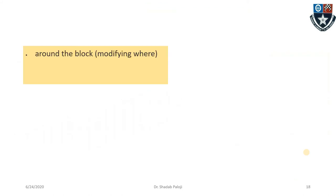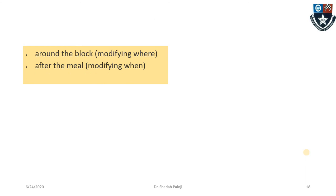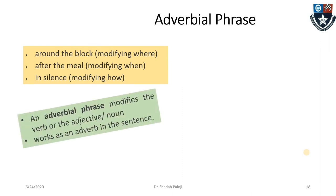Now adverbial phrases: 'around the block' modifies where; 'after the meal' modifies when; 'in silence' modifies how. When I say 'around the block' — where will you come? Around the block. 'After the meal' — when will you meet? After the meal. 'In silence' — how will you meet? In silence. Such adverbial phrases talk about action in terms of where, when, or how, and they modify a verb or an adjective.